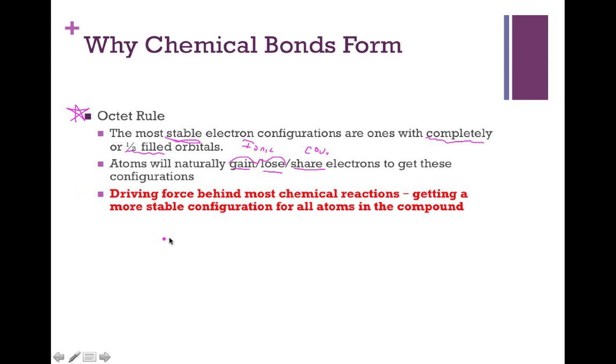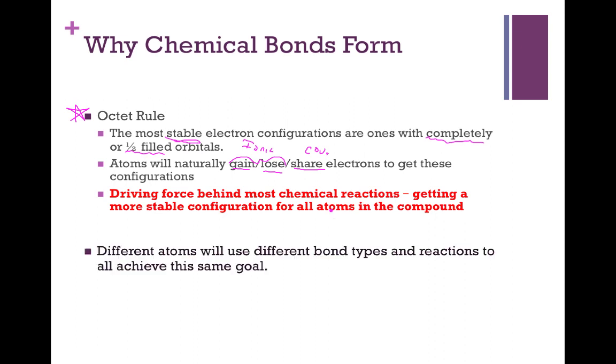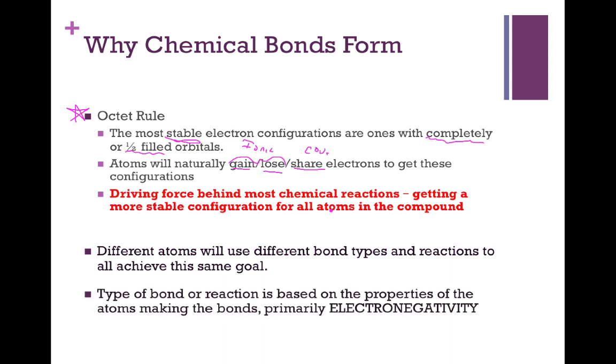Therefore, we can say that the driving force behind most chemical reactions is getting a more stable electron configuration for all the atoms in the compound itself. The difference, then, is the types of atoms involved in this process. Different atoms will use different bond types and reactions to achieve, ultimately, this same goal.